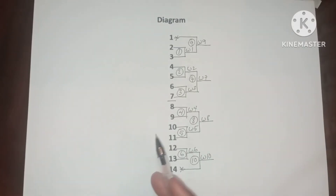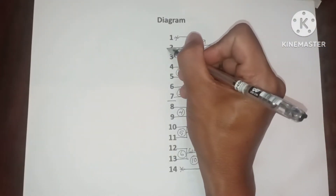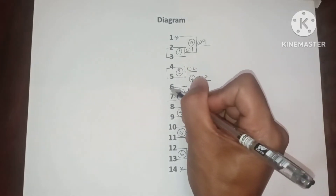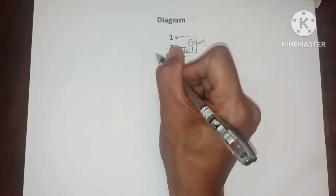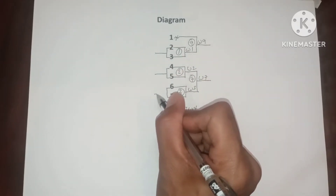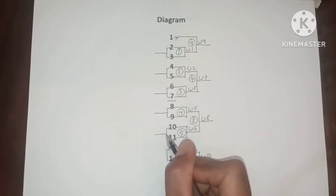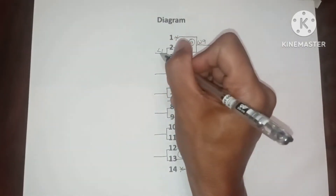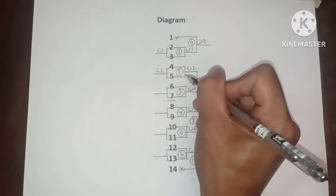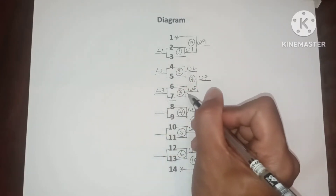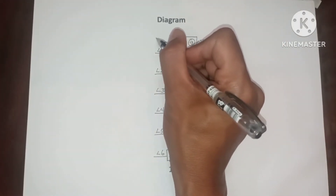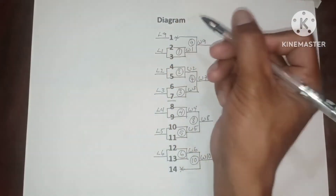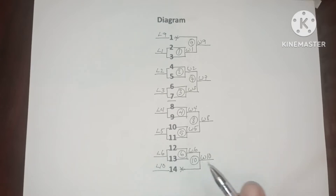Now let's proceed to the loser's bracket, starting with game 1. Loser 1 from game 1, loser 2 from game 2, loser 3 from game 3, loser 4, loser 5, loser 6, loser 9, and loser 10. Now let all the losers play.